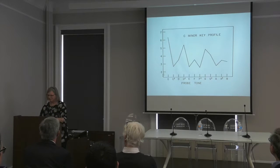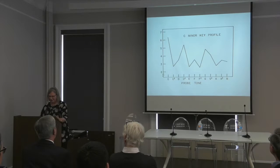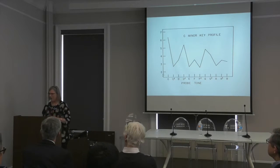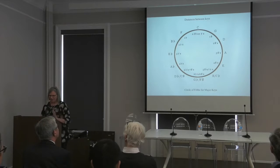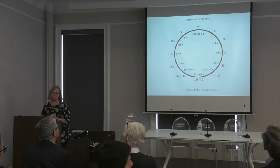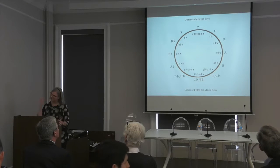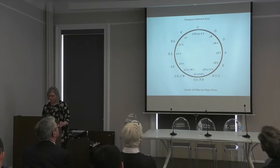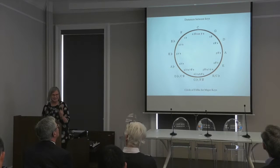We did this for a variety of major and minor keys, and this is the pattern for the keys. One of the things that came out was the question of whether we could predict key relationships — another thing music theorists talk about. The key of C has no sharps or flats; G major has one sharp; D has two sharps. Going around the circle in the other direction, F major has one flat, B-flat major two flats, and so on. We were interested in seeing whether we could predict these based on the probe tone ratings.